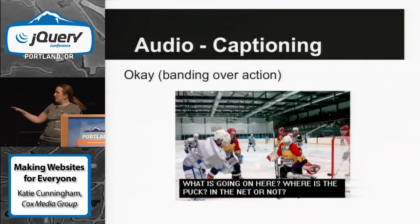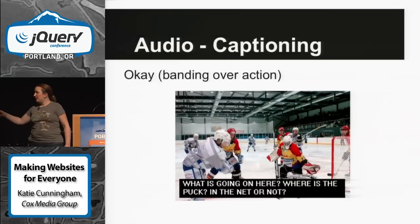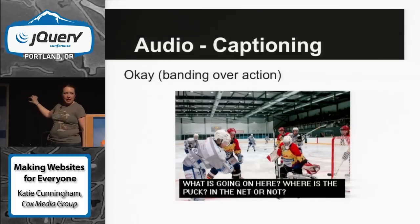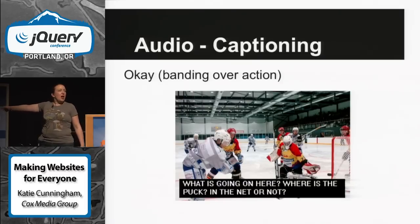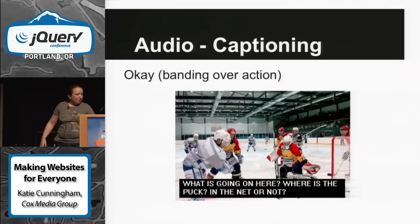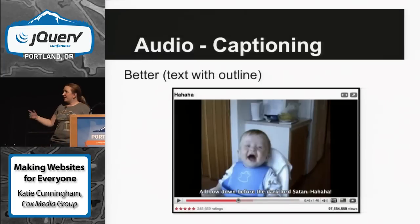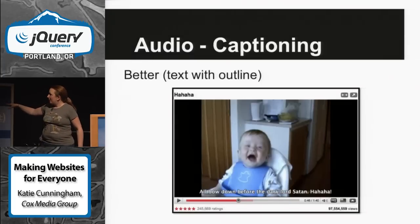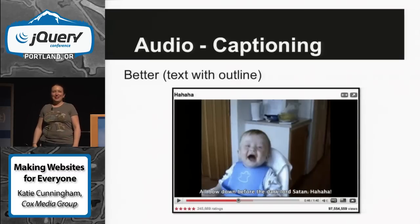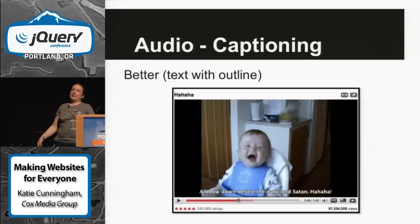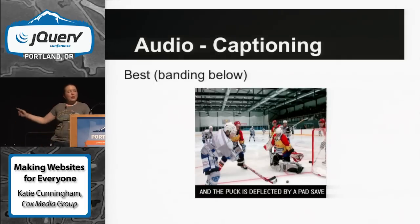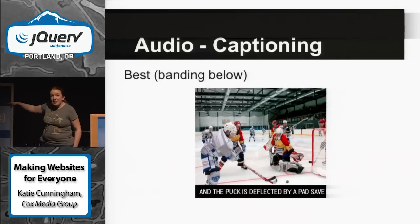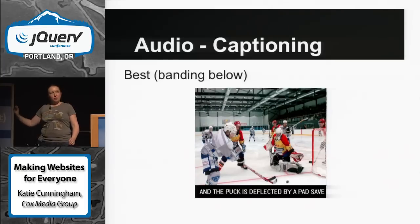Captioning: one approach is banding over the action, but the problem is you miss what's going on in the video — where's the puck? What just happened? Better is text with an outline, though that's actually not very easy to read. The best is banding below the video: you don't miss any data and still have nice captioning. We're on the internet with a big canvas to work with — we can spare a little room. And don't forget you can format your captions. TVs can't format because TVs are limited, but your web browser is not — so you can use a nice font and do capitalization correctly.